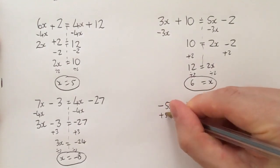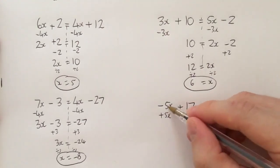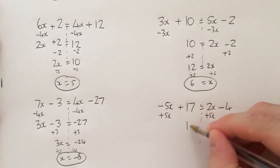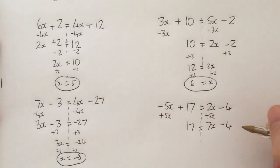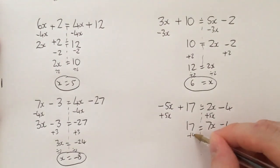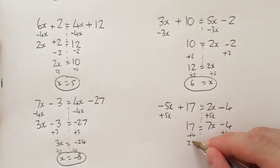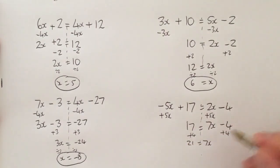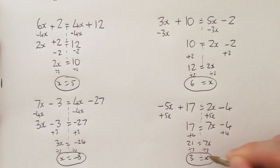So to get the x's on the same side, I'm going to look at this number. Because it's minus 5 and is smaller, do the opposite, which is positive 5x. So that will become zero. 17 will be on this side. 2x plus 5x is 7x minus 4. Add 4 on both sides to get x by itself. 21 equals 7x, divide by 7, 3 equals x. Final answer.